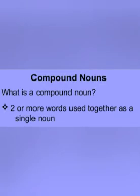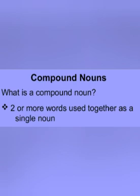Next is compound noun. Compound noun is formed by putting two words together — jo do nouns ko mila ke ya do words ko ek saath rakh ke bantah hai, that is called compound noun. For example, stair means jeena, case — stair plus case equals staircase. Police is a noun, man is also a noun — police plus man equals policeman.